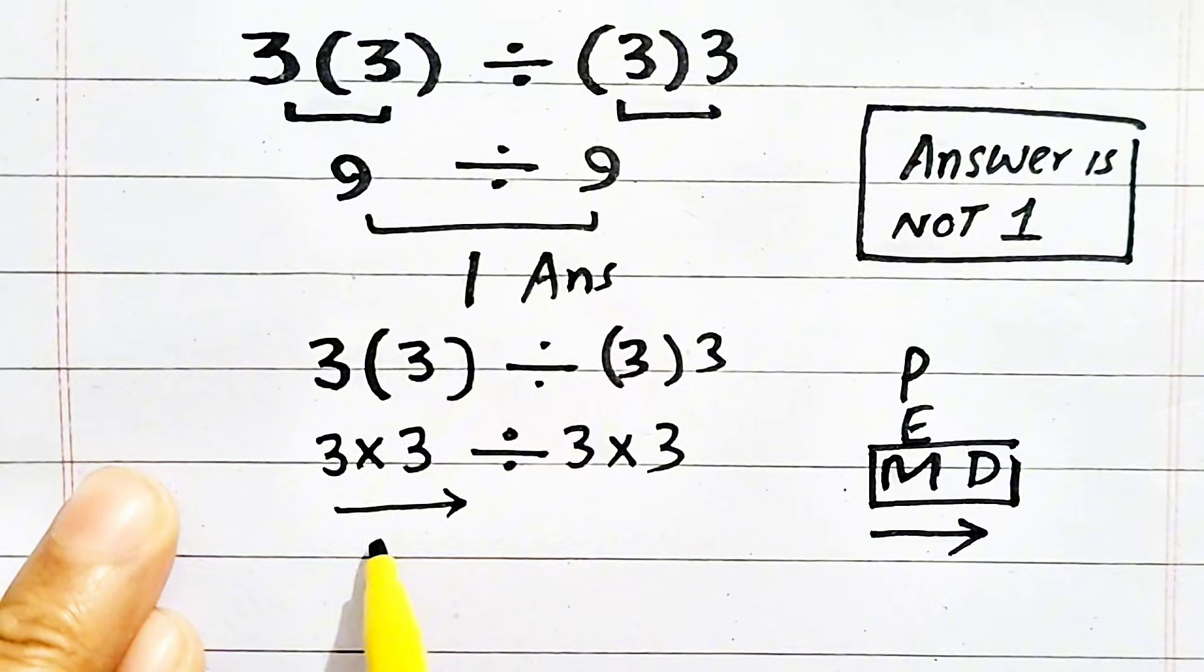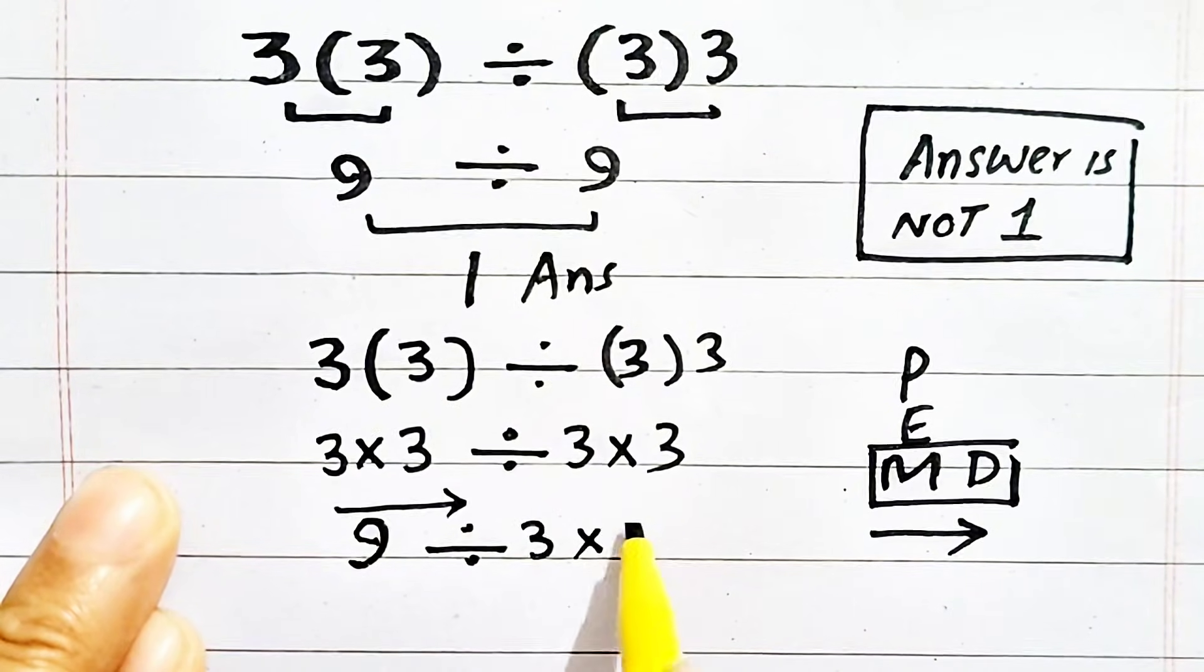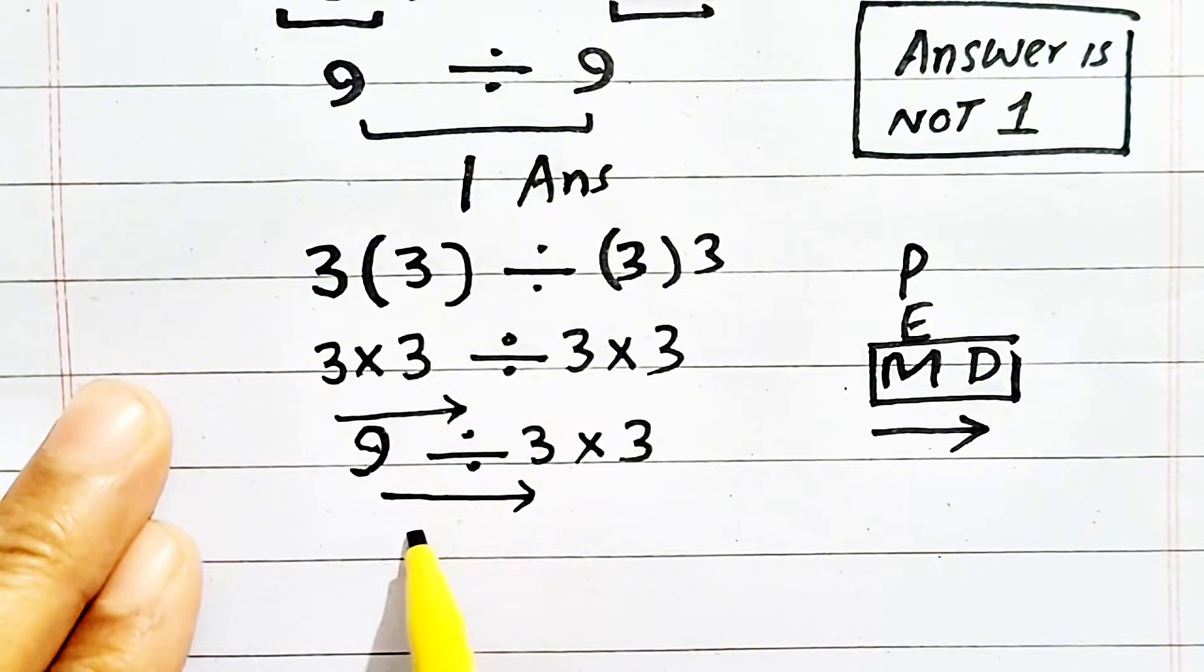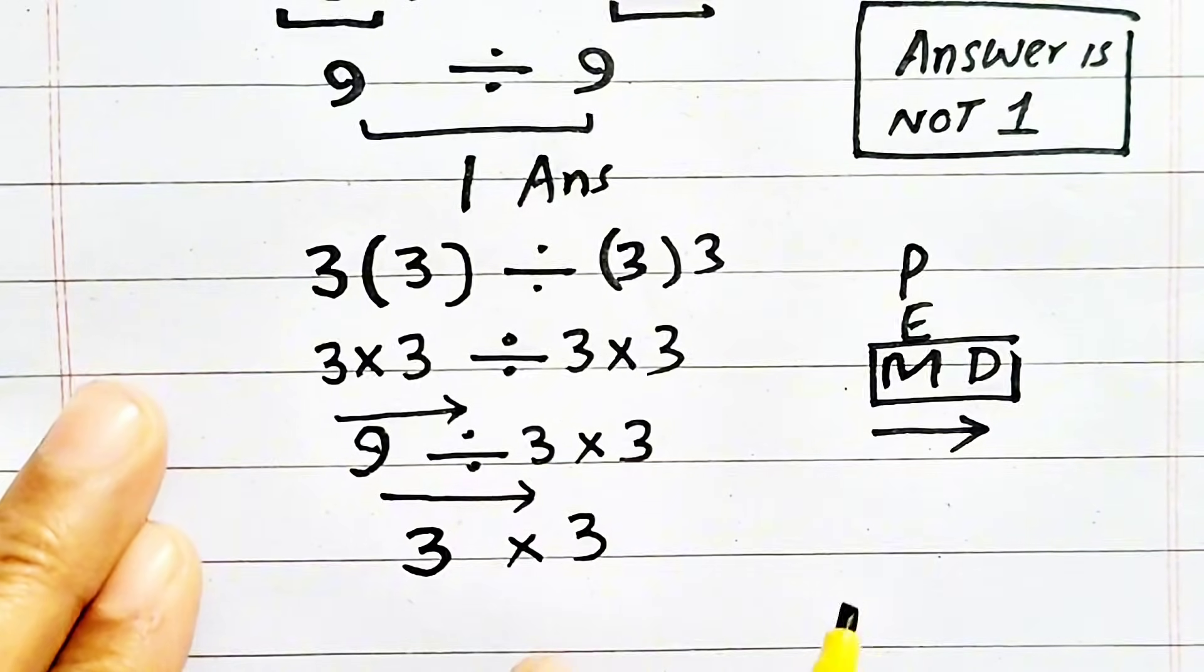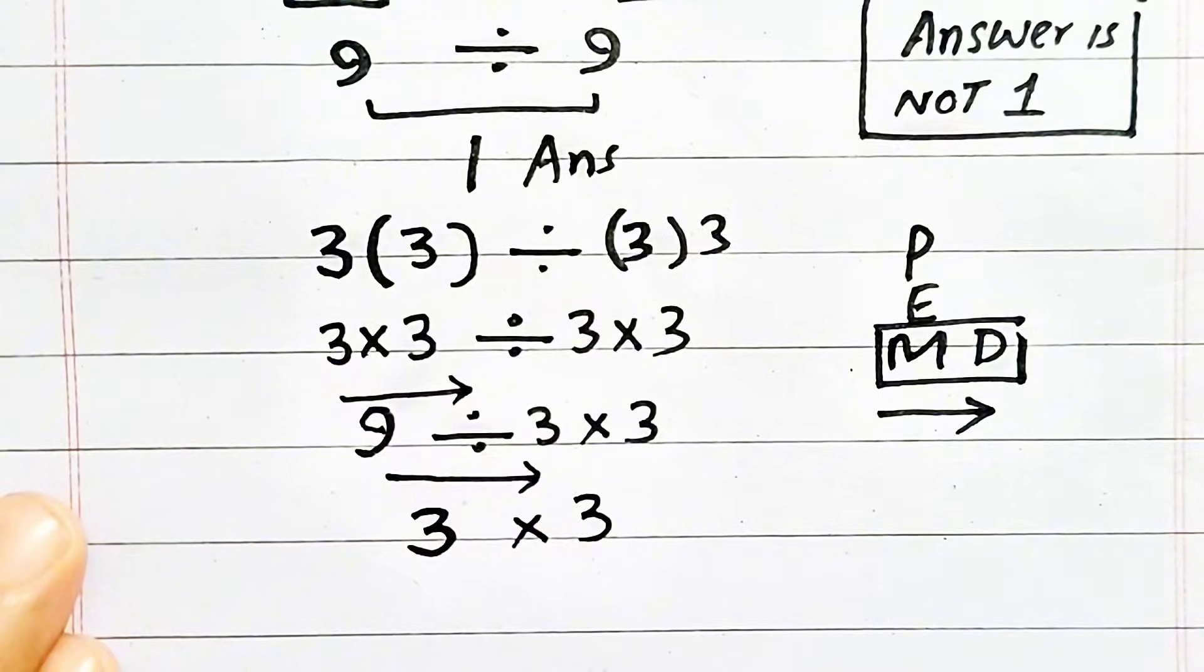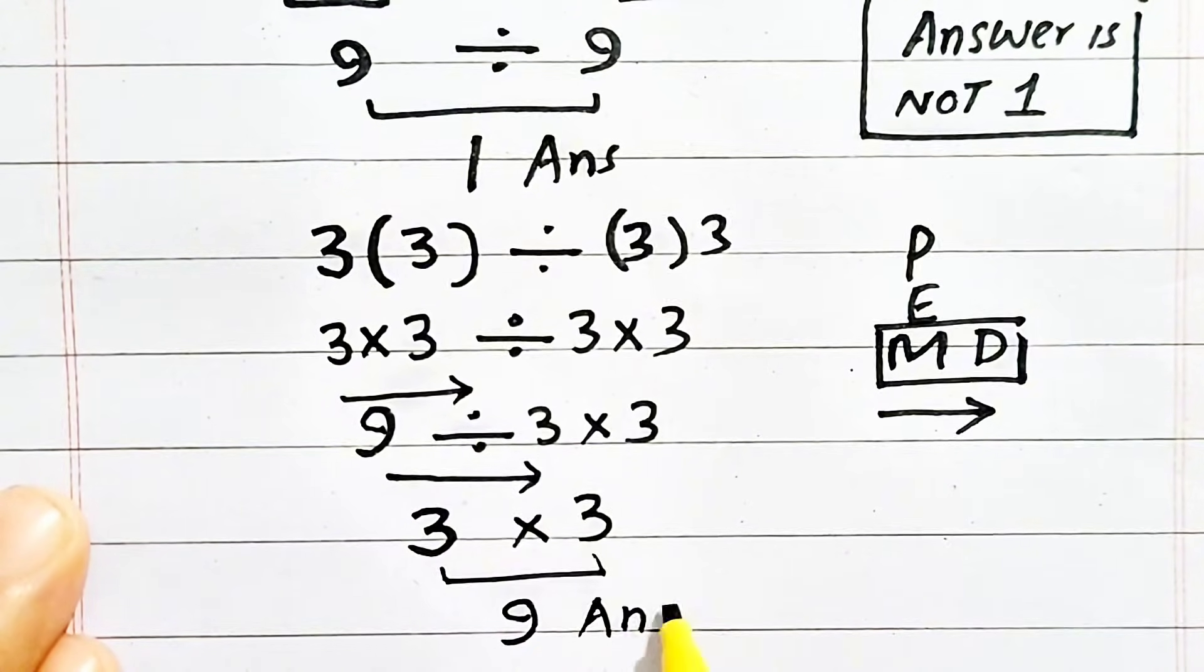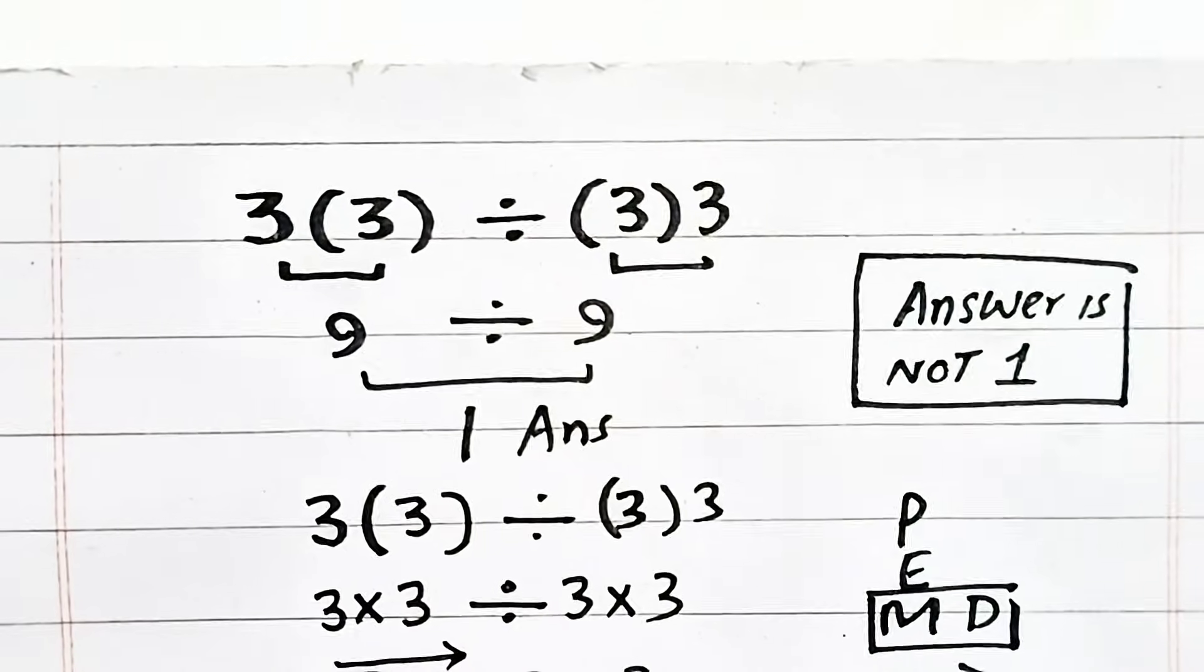So 3 times 3 will be solved first, to get 9 divided by 3 times 3. Don't solve this because it is at right, and we have to move from left to right, so 9 divided by 3 will be solved first which is equal to 3 times 3. Now, 3 times 3 will be equal to 9, so 9 will be our accurate and correct answer instead of 1.